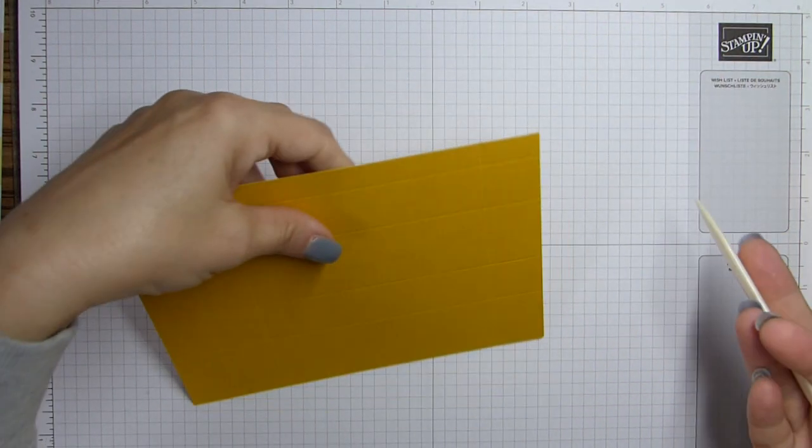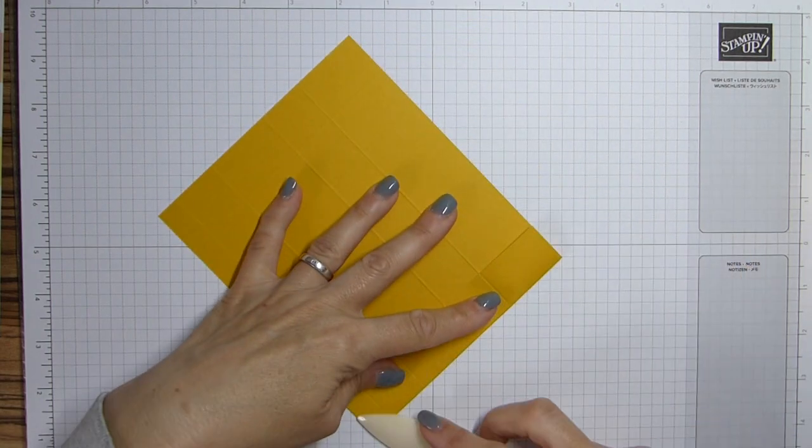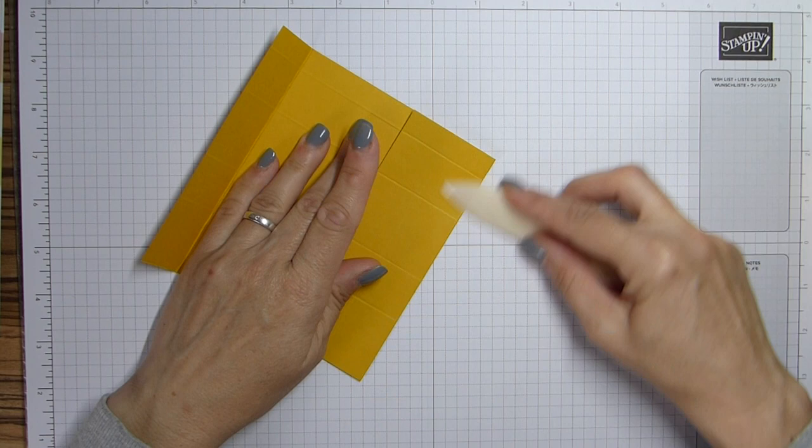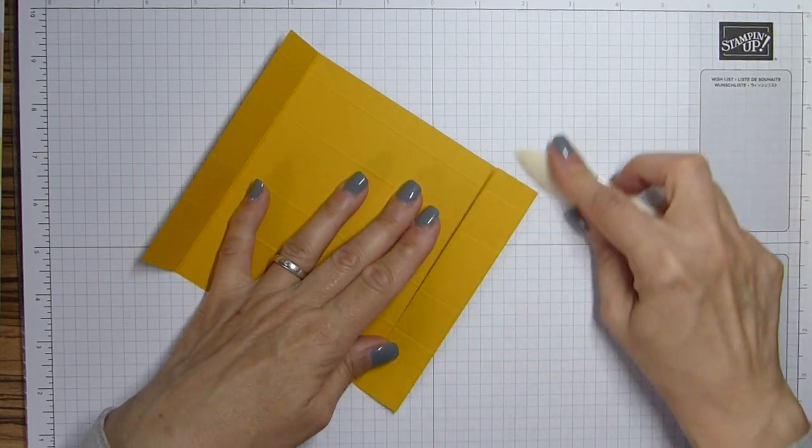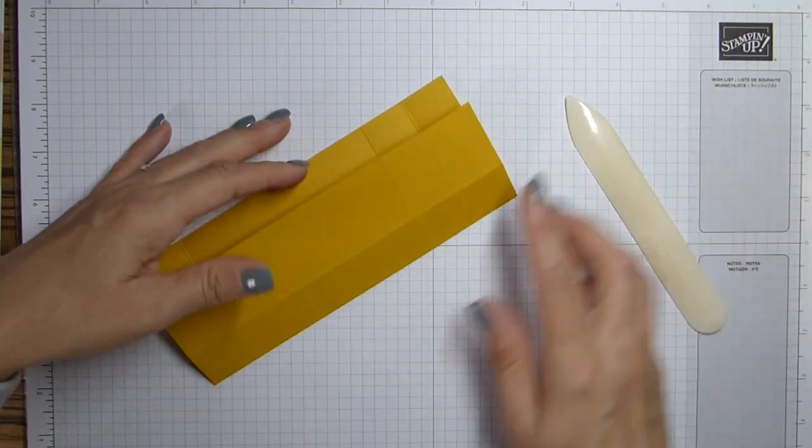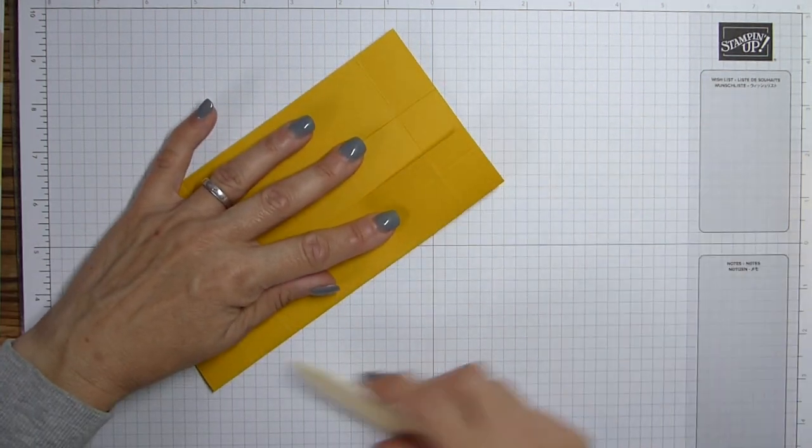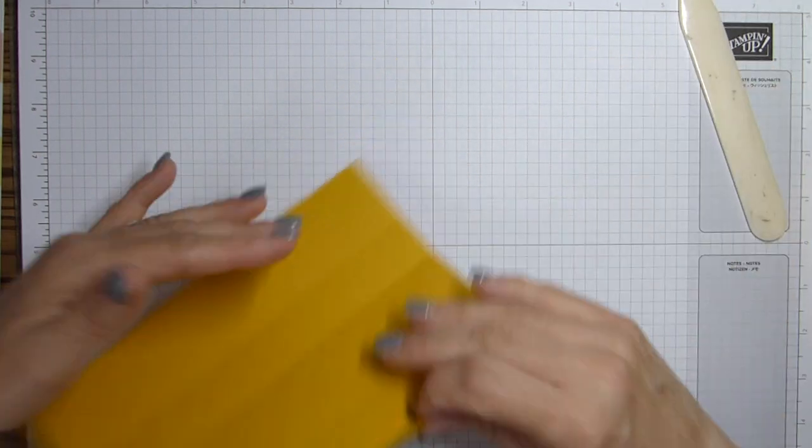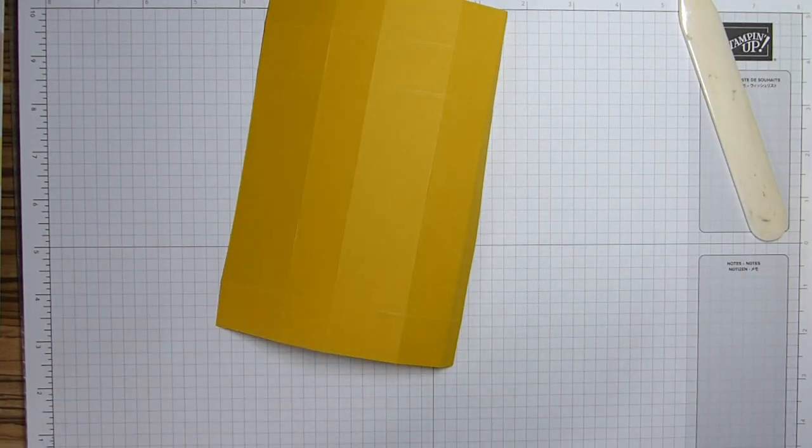As I say, this is the same box and same sizes as I made for the concertina box. So if you did make those, these boxes are exactly the same. The only difference being on these is that I haven't added the DSP when I've made the boxes up.